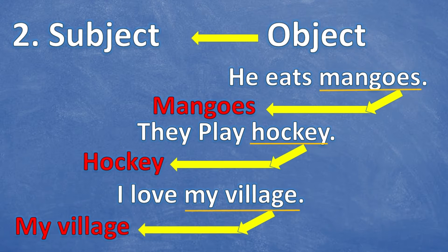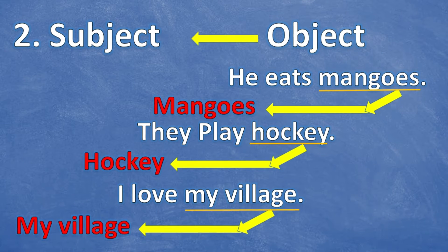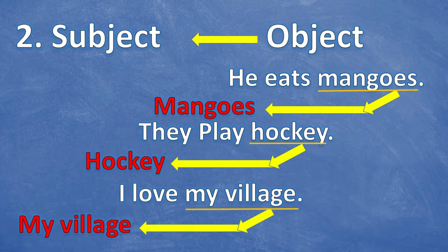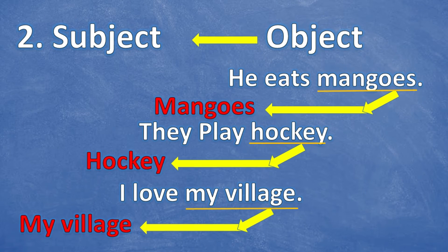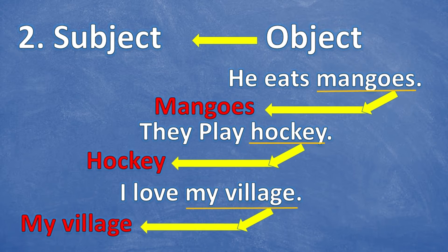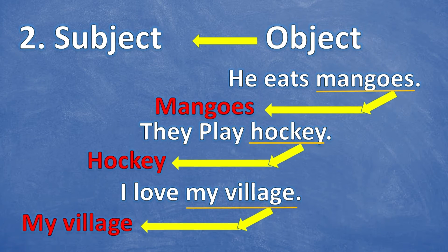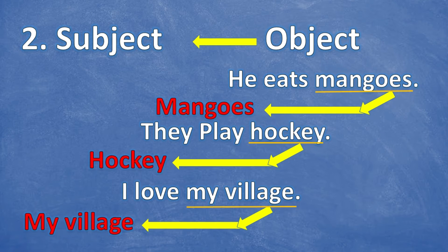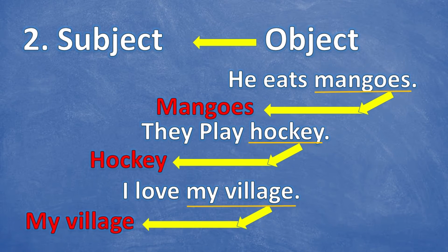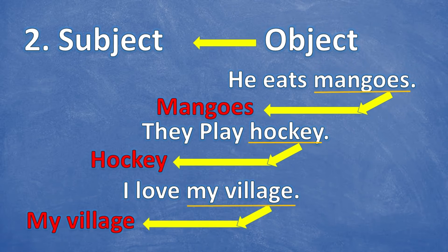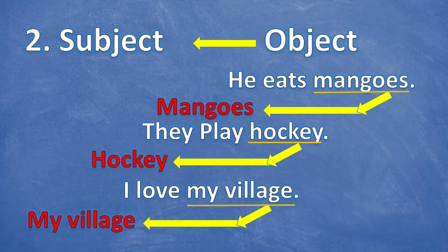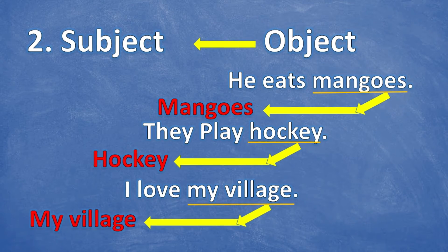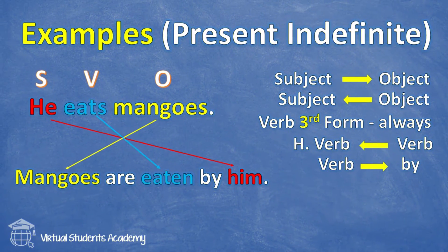Rule number two: the object takes over the subject place. 'Mangoes' is coming to the beginning — that's why M is capitalized. 'Hockey' — H is capitalized. And as I mentioned, you bring the object with its adjective, so 'my village' comes together, not just 'village.'